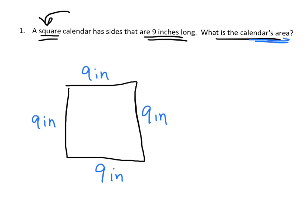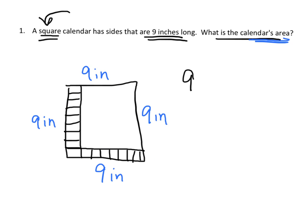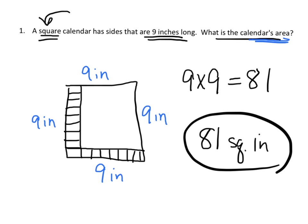Remember what this means: this 9 inches means there are going to be 9 square inches going up, and this 9 means there are going to be 9 going across — 1, 2, 3, 4, 5, 6, 7, 8, 9. We've got 9 going this way and 9 going this way, and the quick way to count all those square tiles is 9 times 9, which is 81. So there are 81 square inches in this square calendar.